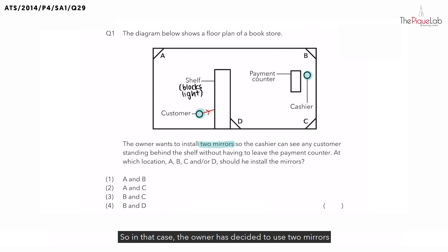So in that case, the owner has decided to use two mirrors to help the cashier see the customer standing behind the shelf. Now let's identify where we should place the first mirror.